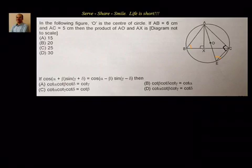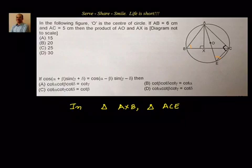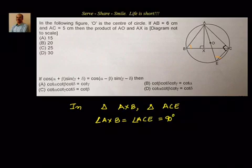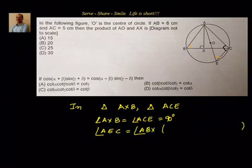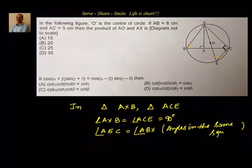Let's write this down formally. In triangle AXB and triangle ACE: angle AXB is equal to 90 degrees — we know that. Also, angle AEC equals angle ABC, and ABC equals ABX — these two angles are equal because angles in the same segment are equal.